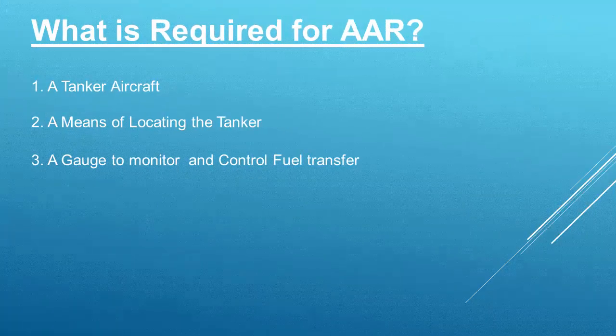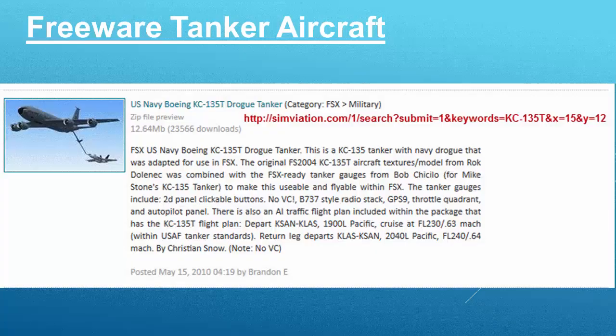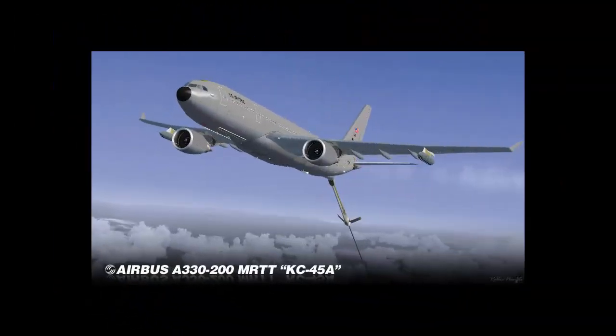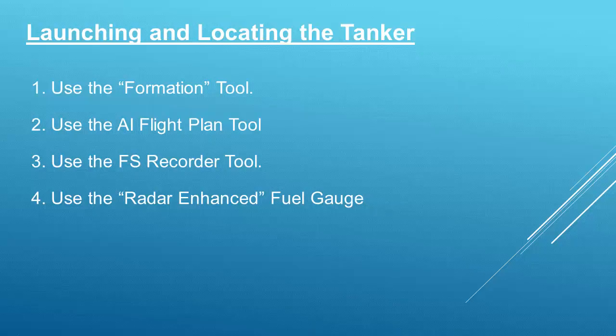So what do we need for air-to-air refuelling? Obviously we need a tanker aircraft, a means of locating that tanker, and some sort of gauge to monitor. Here's a freeware tanker, a KC-135. There's also an A330 available. For launching and locating the tanker there are some tools we can use: the formation tool, the AI flight planning tool, the flight sim recorder tool, and a gauge tool.